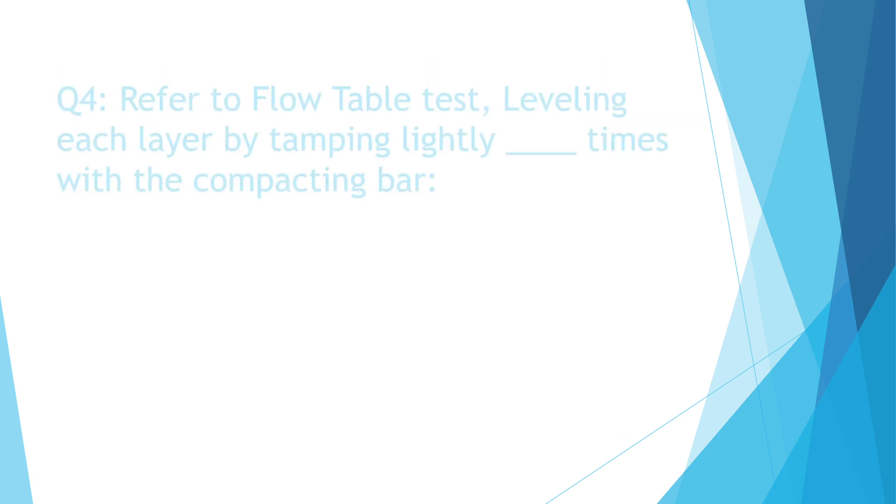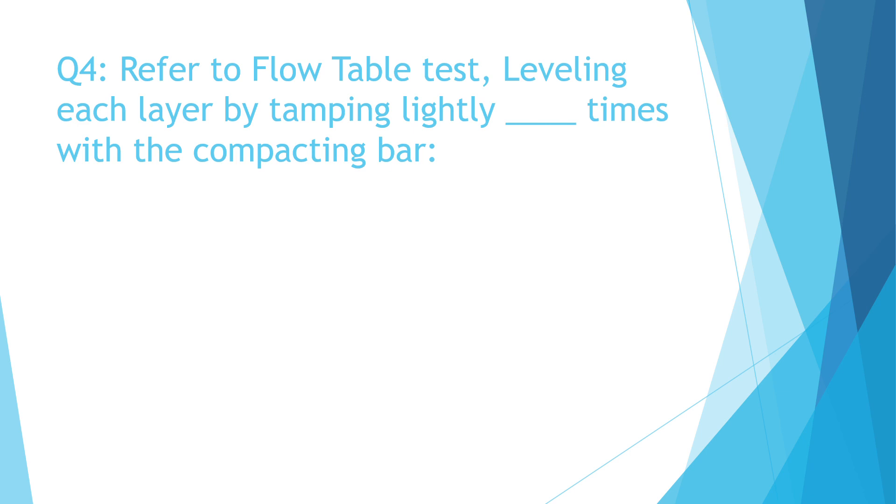Question number four. Refer to flow table test. Leveling each layer by tamping lightly. A. 15 times. B. 10 times. C. 12 times. D. 25 times.